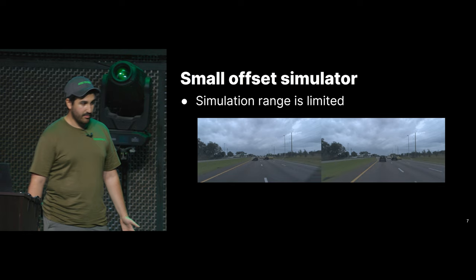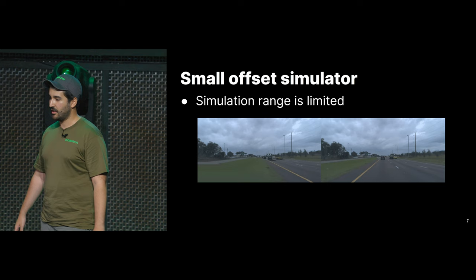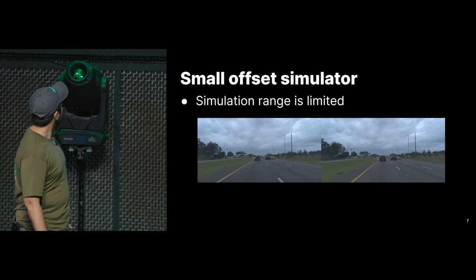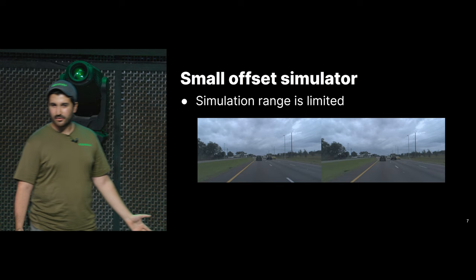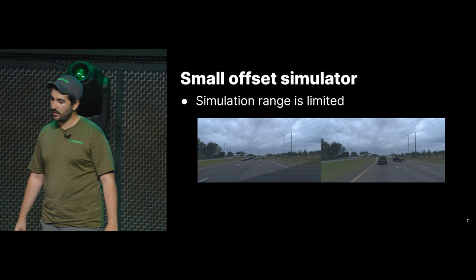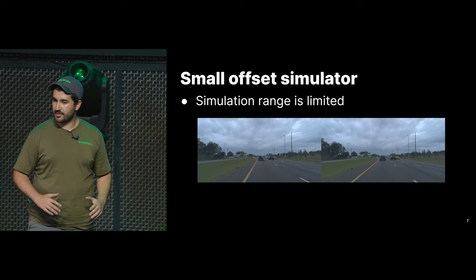The second problem is right in the name: it's a small offset simulator, not a big offset simulator. As soon as we try big offsets, the images look very funky. For lateral movement that's less critical since you don't deviate much left to right. But longitudinally, at highway speeds, plus or minus ten miles per hour is a really big distance. So you really want a big offset simulator for longitudinal movement.